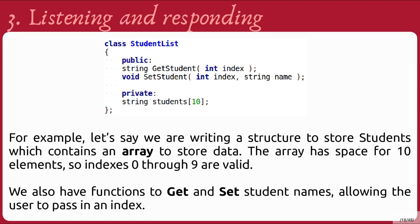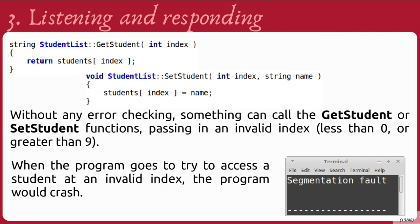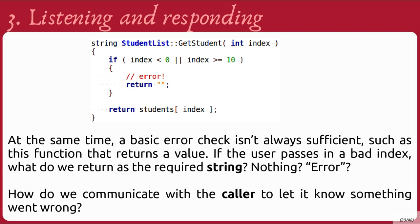As an example, let's say we are writing a structure to store students, which contains an array to store the data. The array has space for 10 elements, so indexes 0 through 9 are valid. We also have functions to get and set student names, allowing the user to pass in an index. Without any error checking, something can call the get student or set student functions and pass in an invalid index — something less than 0 or greater than 9 — and when the program goes to access a student at that invalid index, the program would crash.